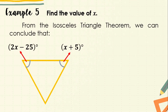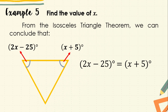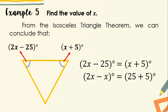Let's move on to the next example — find the value of X. This is an isosceles triangle. By applying the isosceles triangle theorem, the two base angles are equal, so 2X minus 25 degrees equals X plus 5 degrees. Grouping like terms: 2X minus X equals 25 plus 5, which gives X equals 30. Therefore, the value of X is 30 degrees.